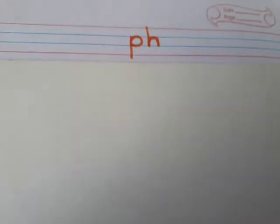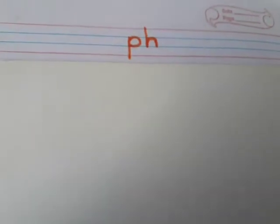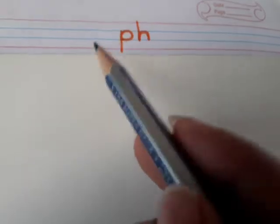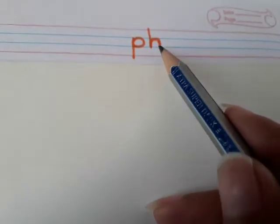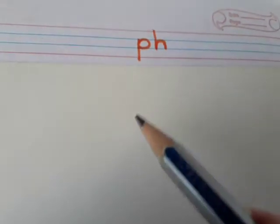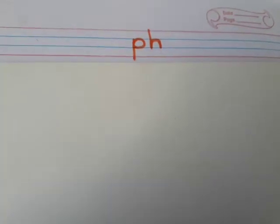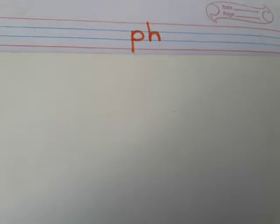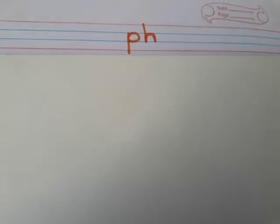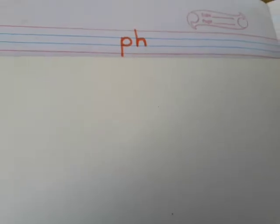This digraph is made from two letters P and H. As we know, the sound of P is P and the sound of H is H. So when we put these two letters together, they will sound like F. Now look at some examples of the F sound.